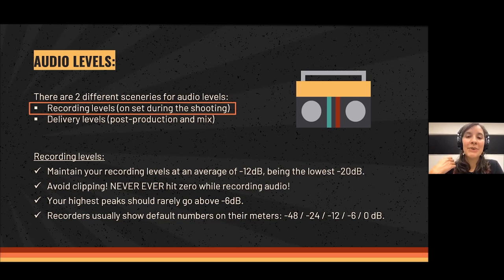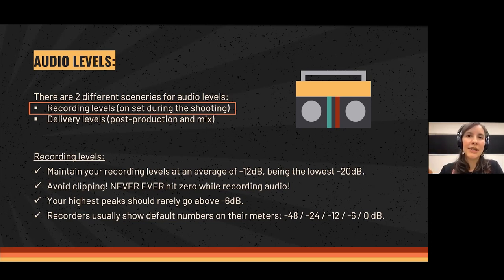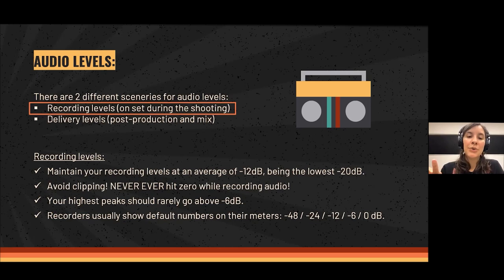Avoid clipping — never hit zero while recording audio. Of course, some incidental sounds like a clap or hitting the table will be very loud, but the main principle is that the voice of the person you are recording should never hit zero. Your highest peaks, for example when the person gets excited and talks louder or suddenly laughs, should be around minus 6 dB. Most recorders show default numbers on their meters to help you know where you are — these are examples of numbers, though some show different values.